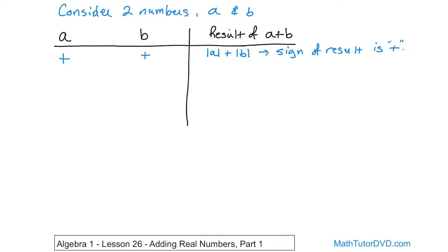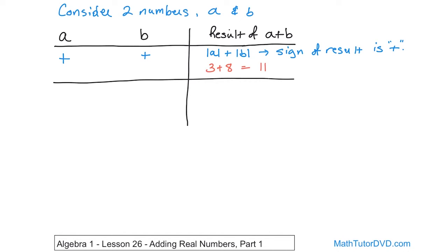Just to absolutely reinforce it — if you add 3 plus 8, you're always going to get positive 11. You just add them, and the result is positive. Let's continue filling out the table.